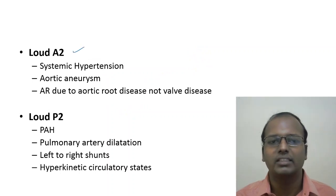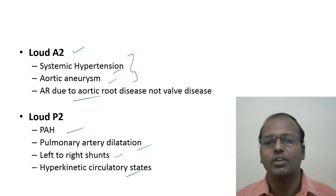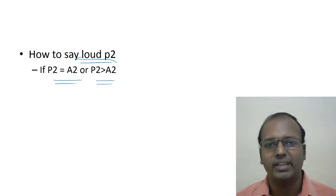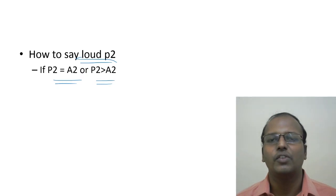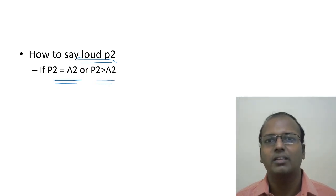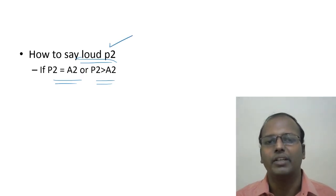Loud A2 is heard in systemic hypertension, aortic aneurysm, and aortic regurgitation due to aortic root disease. Loud P2 is heard in pulmonary hypertension, pulmonary arterial dilatation, left-to-right shunts, and hyperdynamic circulatory states. Clinically, P2 is considered loud when its intensity equals or exceeds A2. Intensity equals loudness — distinct from pitch, which is frequency. When P2 intensity is ≥ A2 intensity, you can confidently call it a loud P2.